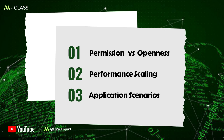Third, applications and compliance. Public chains fit open ecosystems and composable innovation. Private chains suit regulated industries requiring privacy, auditing, and internal controls. Understanding these three aspects is essential for choosing the right architecture.